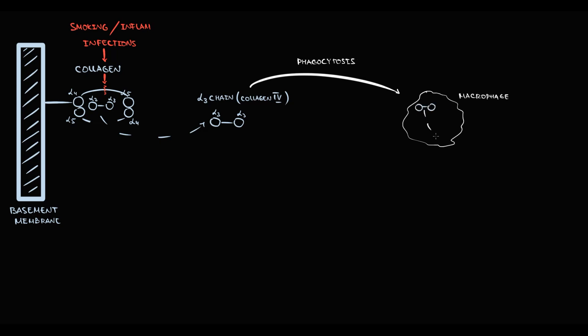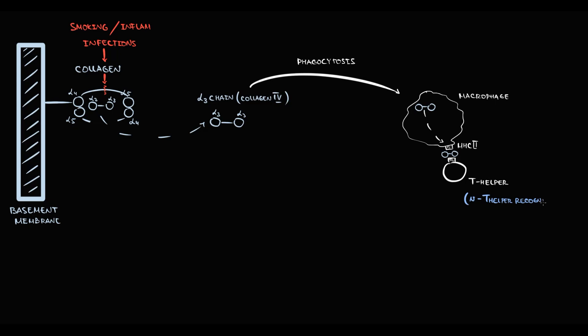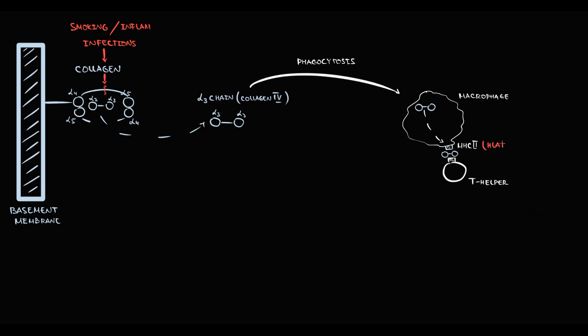Macrophages present parts of the alpha-3 chains on MHC2 receptors to T-helpers. The logic is that antigen-presenting cells want to determine whether the alpha-3 chains of collagen are normal material or something pathogenic. T-helpers scan the alpha-3 chains, and in normal conditions T-helpers recognize them as normal substances and thereby do not trigger inflammation. But some people have MHC2 receptors produced based on the HLA-DRB1 allele, and in this case inflammation will most probably develop.